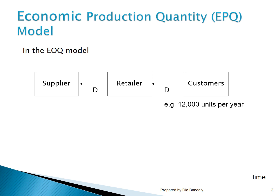The question is: how does he order it? Does he order the whole quantity by January 1st, or what? He can do it, but we learned from the EOQ model that he will be incurring a very high carrying cost. So it makes sense that he splits the annual demand into smaller order quantities Q. But what should that quantity Q be? The retailer has an unlimited number of choices.